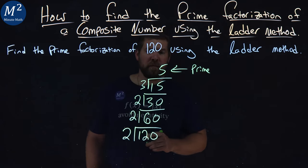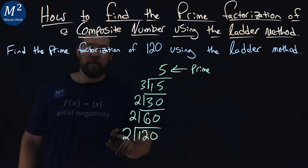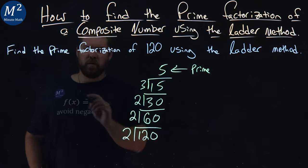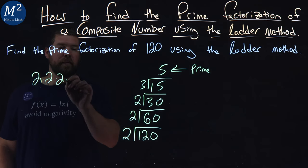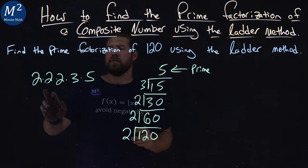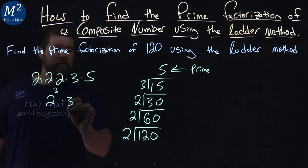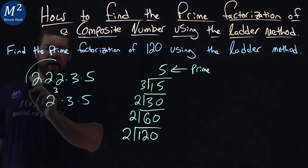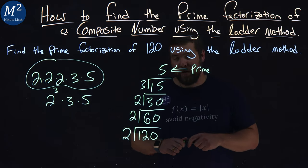5 is a prime number, and so we're done with the ladder method, as you can see. So the prime factorization of 120 is 2 times 2 times 2 times 3 times 5. 2 times 2 times 2 is 2 to the third power times 3 times 5. Here's our prime factorization of 120 using the ladder method.